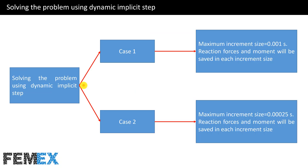In the previous part of this tutorial, we solved a simple dynamic problem using the dynamic explicit step. In this tutorial, I want to solve it using the dynamic implicit step in two cases. In case one, the maximum increment size will be selected as 0.001 second. And in case two, the maximum increment size will be set to 0.00025 seconds.